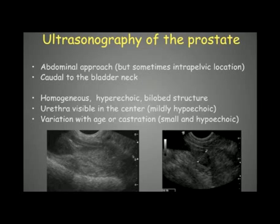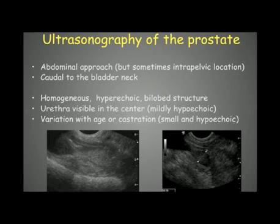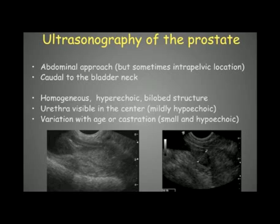Here we have the pelvic edge — the pubic bone — which can sometimes obscure the caudal aspect of the prostate. The prostate is usually homogeneous with a hyperechoic bilobite structure, shown here in a longitudinal image. The urethra can be visible in the middle as a thin hypoechoic line.